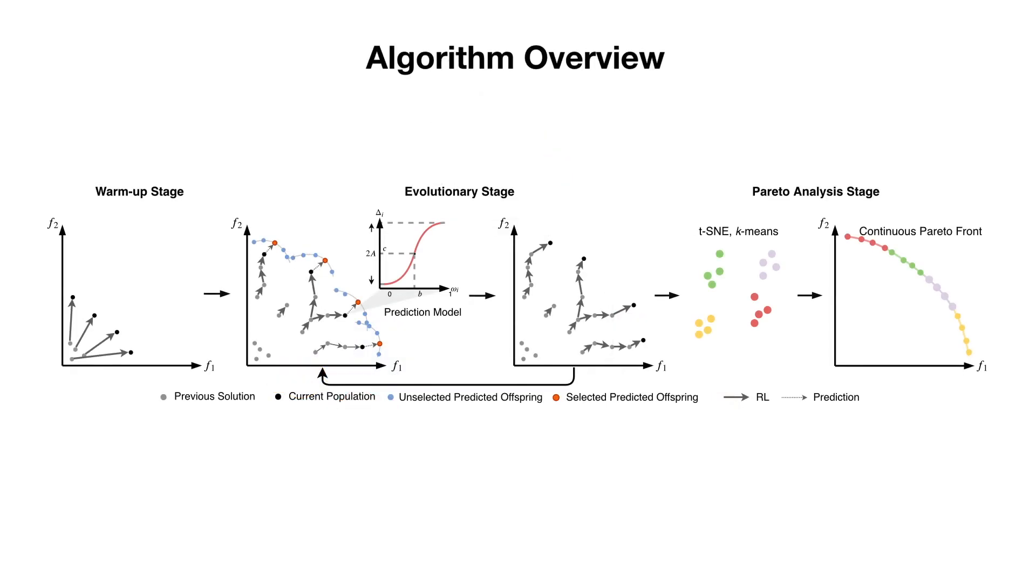To find such Pareto representation, we propose an efficient algorithm to compute the Pareto set of policies. Our algorithm starts with a warm-up stage where policies are randomly initialized and each is optimized by reinforcement learning with one preference weight. The resulting policies form the first generation of the policy population.